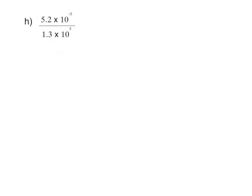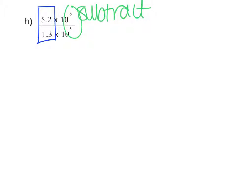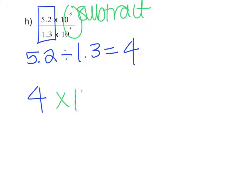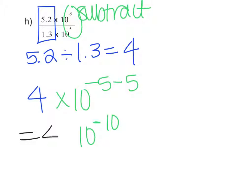In order to divide numbers in scientific notation, the exponents do not need to be the same. All we need to do is divide the numbers and then subtract the exponents. So 5.2 divided by 1.3 equals 4. Now we have 4 times 10 to the — subtract the exponents — negative 5 minus 5, which gives us 10 to the negative 10. So the final answer is 4 times 10 to the negative 10.